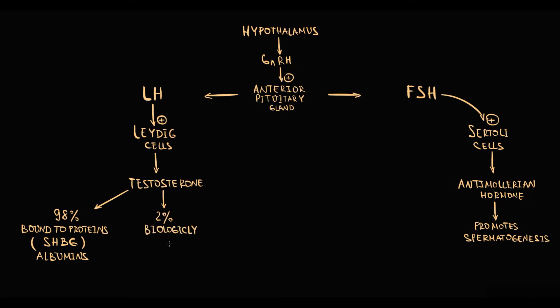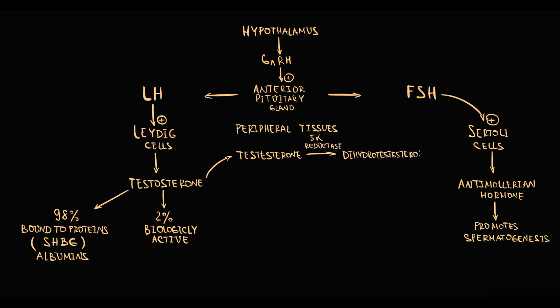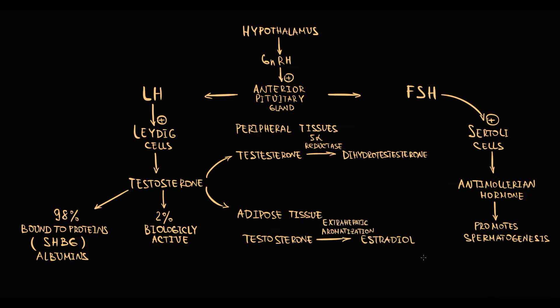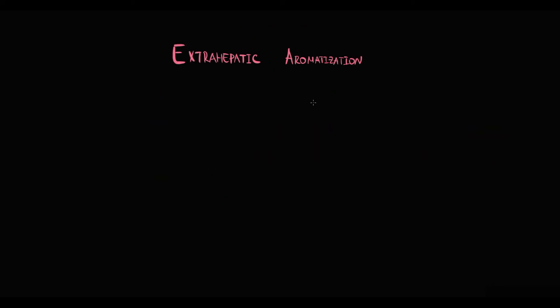Free testosterone can be delivered to peripheral tissues, where it can be converted by the 5-alpha reductase enzyme to dihydrotestosterone. Also, free testosterone can be delivered to adipose tissue, where extrahepatic aromatization converts testosterone into estradiol. Extrahepatic aromatization occurs mostly in adipose tissue, but can also occur in bone cells.